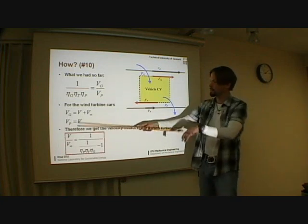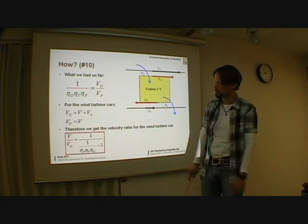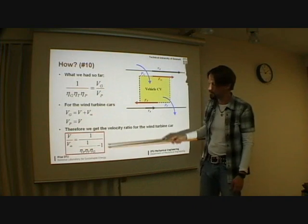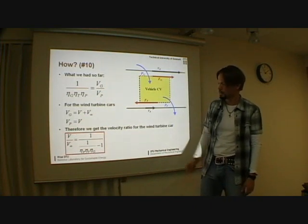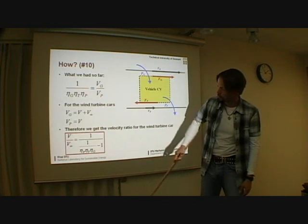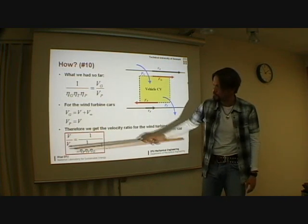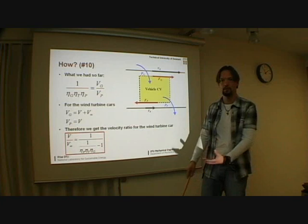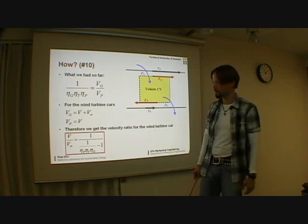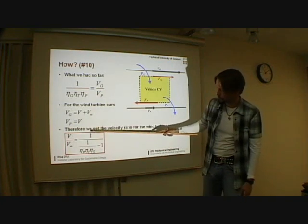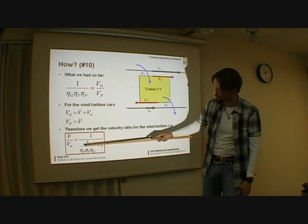Put everything into there and then move a little bit around. You see, this is the relation we get for the velocity ratio of the car. The car velocity would be equal to this thing times free stream velocity measured when you just stand on the ground. You see here, there is one over something and then there is one over something again.